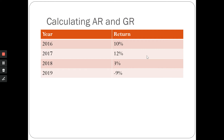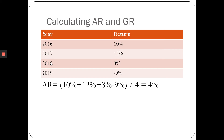The arithmetic mean simply tells you that each of these returns has an equal chance of occurring. You simply add them all together and divide by four, because there are four years involved. So 10% plus 12% plus 3% plus (−9%), divided by four, gives you 4%.